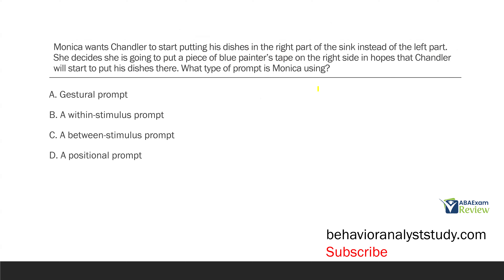Monica wants Chandler to start putting his dishes in the right part of the sink instead of the left part. She decides to put a piece of blue painter's tape on the right side and hopes that Chandler will start putting his dishes there. What type of prompt is Monica using? Let's think about what Monica wants to achieve — she wants Chandler to put his dishes in the right part of the sink. She puts a piece of painter's tape on the right side, and the hope is Chandler sees the blue tape and puts his dishes on the right side.